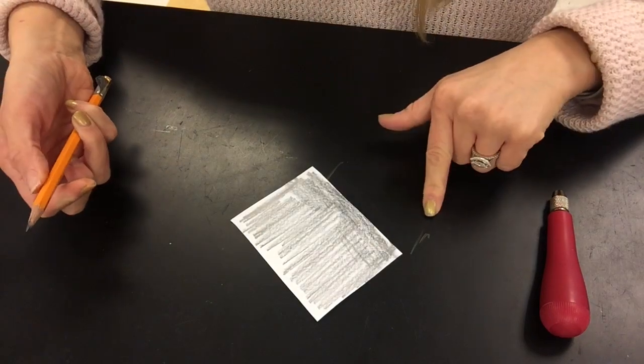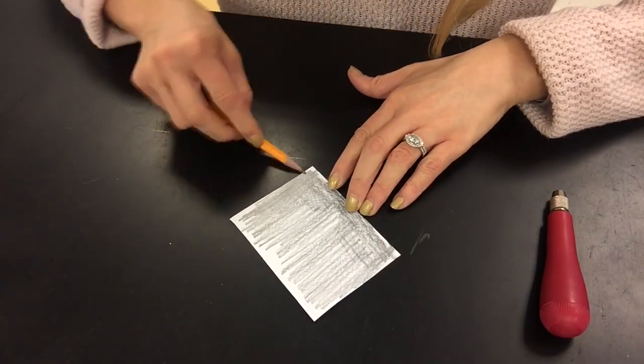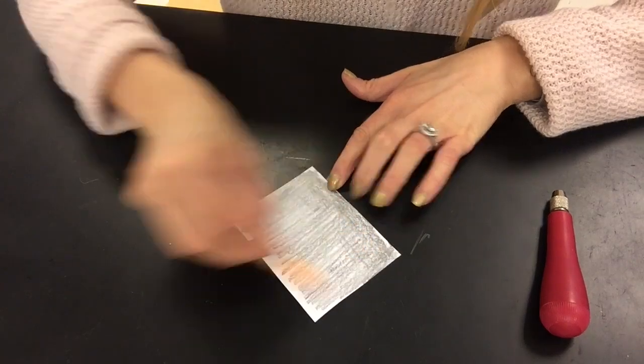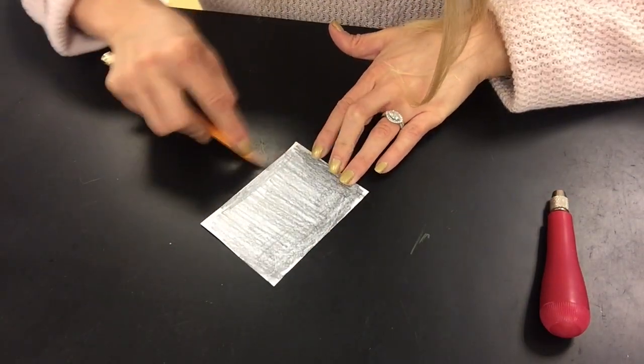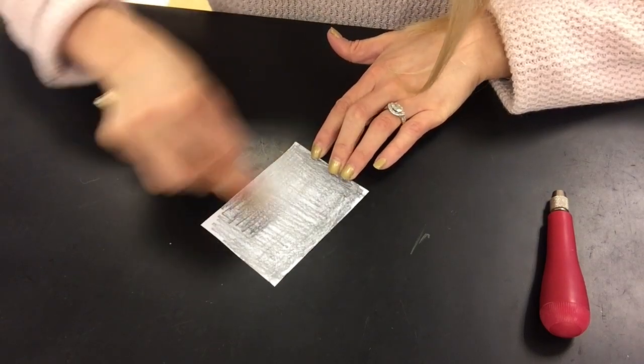If you end up getting some pencil on the table, it's not that big of a deal. Please just do not do that on purpose. If you're not sure if it's dark enough, it's probably not dark enough. Add more. If you don't have enough graphite on here, it will not transfer.